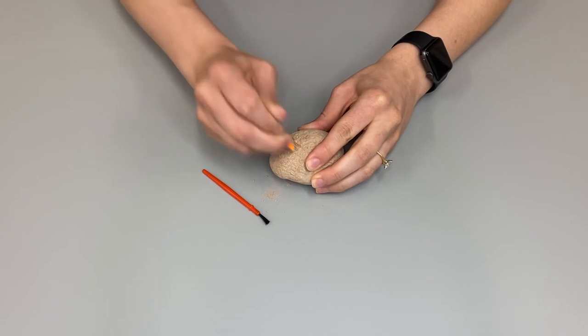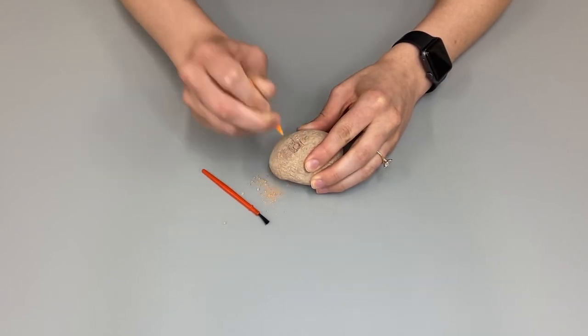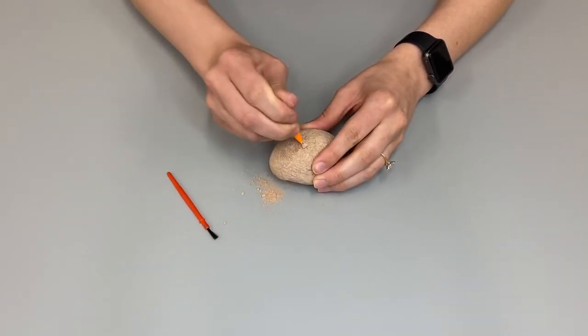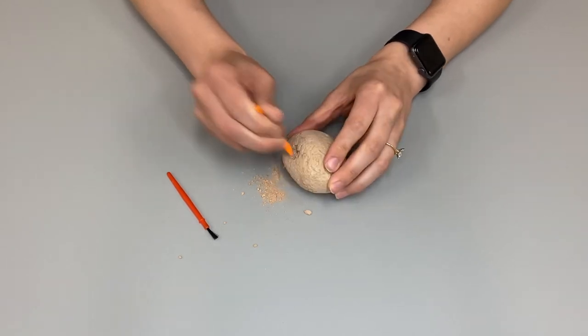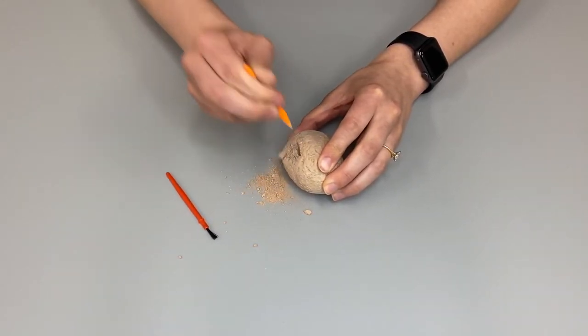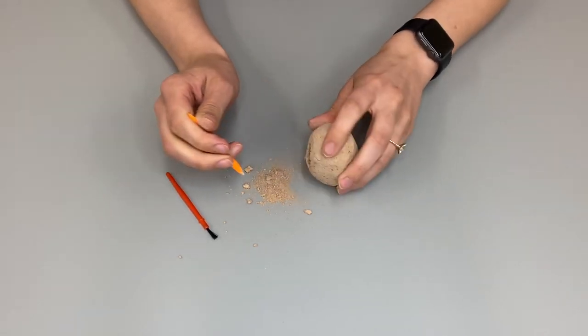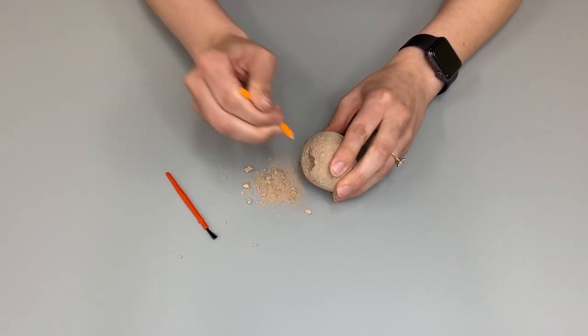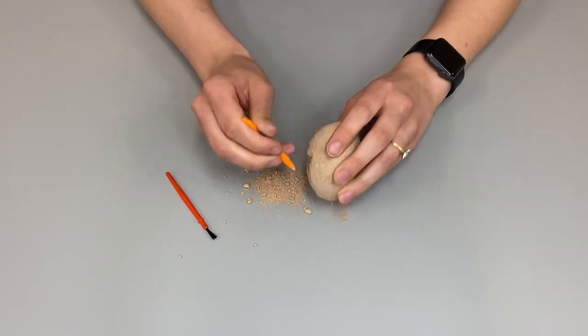If you're ready to go, grab your chisel and begin chiseling away at the dinosaur egg. Remember that paleontologists must be very careful when using tools like this, so make sure you do the same. Chisel little by little, ensuring that you don't damage any dinosaur that is found.